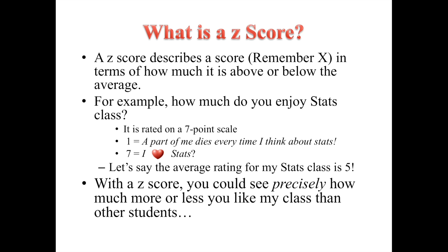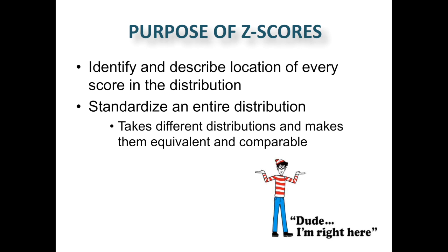In this lecture, we're going to talk about how to find that exact score. Up until this point, we can say you're about one certain deviation above the mean, or slightly more than two certain deviations above the mean. With a z-score, you can find out exactly how many standard deviations above or below the mean you are. The whole purpose of a z-score is to identify and describe both the location of all individual scores and give that location a quantitative measure — for example, a z-score of plus 1.73. It also helps to standardize an entire distribution, taking lots of different distributions and making them equivalent and comparable.